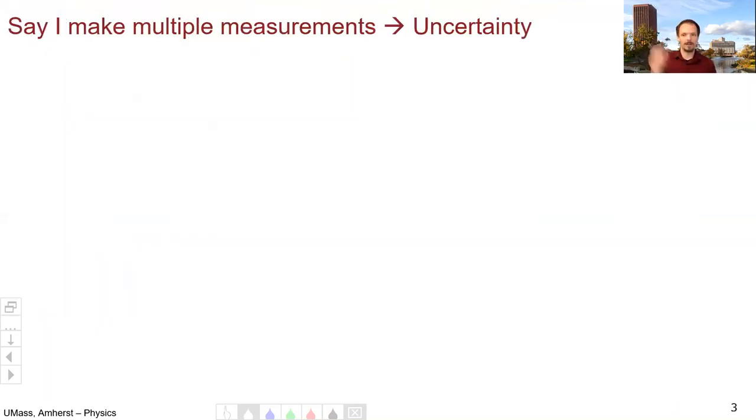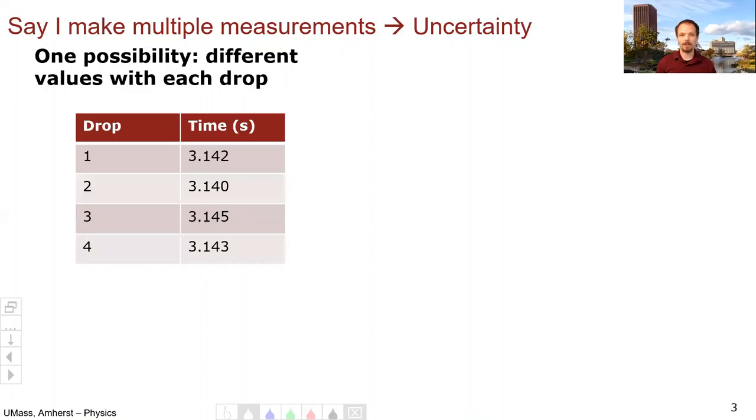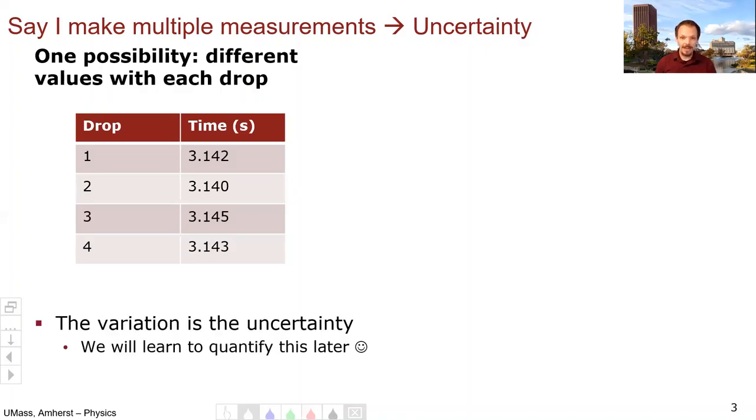So now let's take the ball and drop it several times, say four. This will lead us to the idea of uncertainty. There are two possibilities. One is that with each drop, I measure a different time. So let's say I get these four observations. The variation in these numbers is the uncertainty. We'll learn how to quantify this a bit later, but for now, all that's important is that the variation in these numbers is the uncertainty.